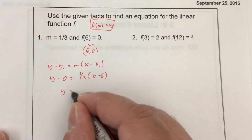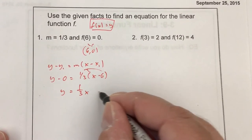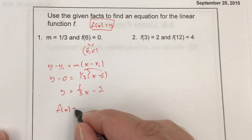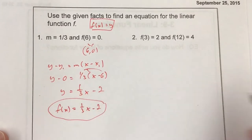y minus 0 in this case is just y, so I just have to distribute. I get (1/3)x minus 2. But since it's a function, make sure we put it in the function form and use f(x) instead of y.